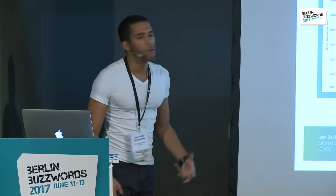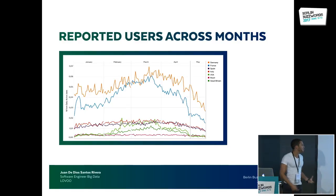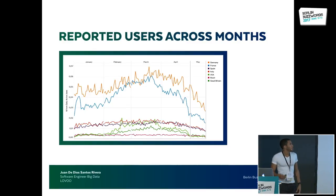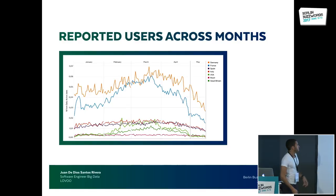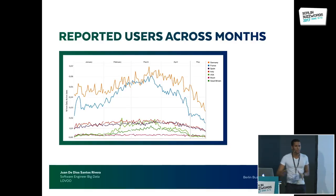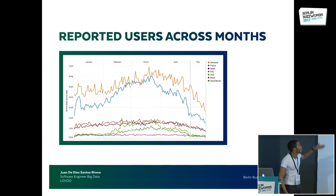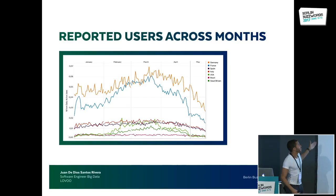Now, how is the system performing? The first graph shows reported users across months. The Y-axis is percentage of daily active users and the X-axis covers all days from the beginning of the year until recently. The colors represent countries — Germany, France, and so on. The average value is around 0.03%, which is a really good number. During March, spammers got a bit cocky and increased their activity, so we see an increasing trend. However, we had planned to deploy our new activity-based model in April, and that's why everything goes down.